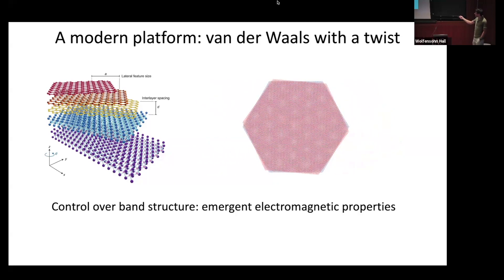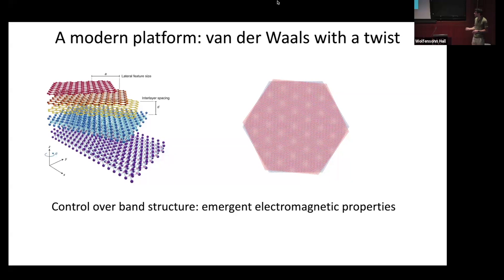You've seen this already: if you stack these materials and twist them relative to one another, a new periodicity develops — the moiré superlattice periodicity. By controlling various tuning knobs — twist angle, electromagnetic fields, or strain — this gives a new, highly tunable playground to address longstanding questions about what happens when electrons interact, how to treat that theoretically, and what sorts of phases can emerge.